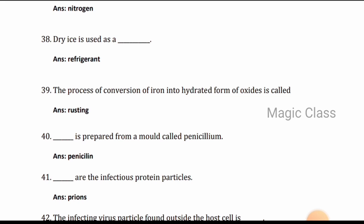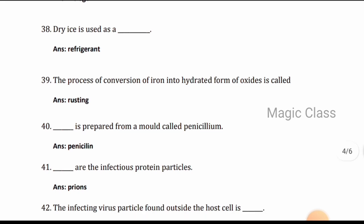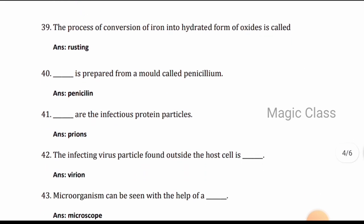Question 38: Dry ice is used as refrigerant. Question 39: The process of conversion of iron into hydrated form of oxides is called rusting. Question 40: Penicillin is prepared from a mold called penicillium.